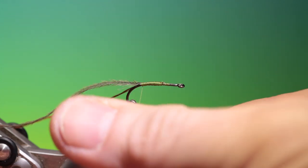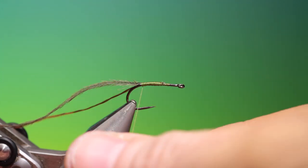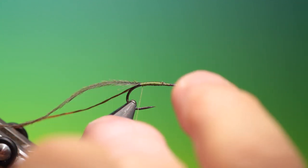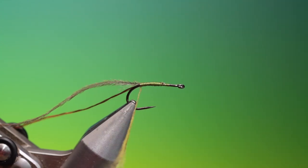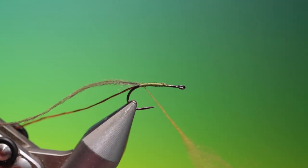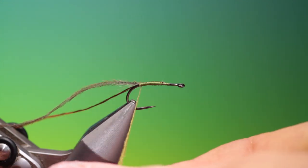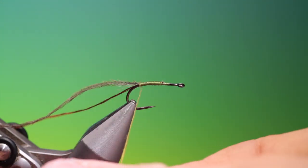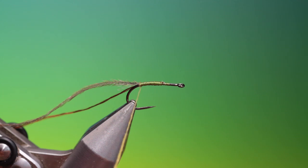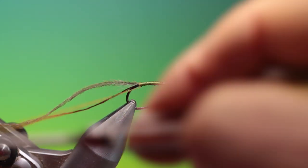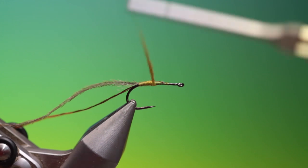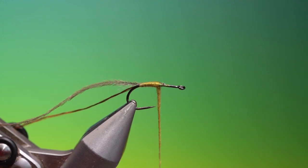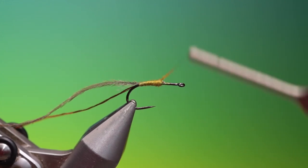We take a little super fine golden olive dubbing. Of course you can change the color of this to match whatever shuttlecock emerger you want to do yourself. Just tack that in with a couple of turns at the back and then we can tighten this up. We don't want to go too tight. That will do just fine and then we can dub the body, getting a little bit thicker as we approach the thorax.